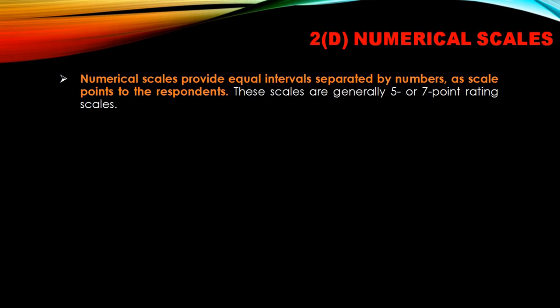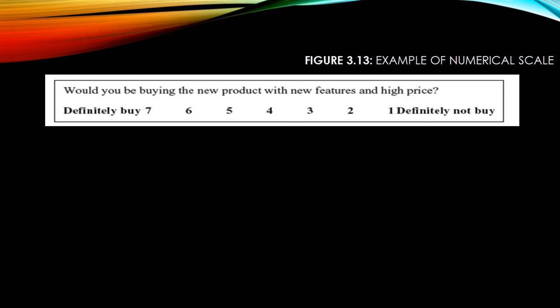Numerical scales provide equal intervals separated by numbers as scale points for respondents. Generally these are 5 or 7-point rating scales. For example: 'Would you be buying the new product with new features and high price?' — with 'definitely buy' at 7 and 'definitely not buy' at 1. A response closer to 7 means close to definitely buying; closer to 1 means unlikely to buy.